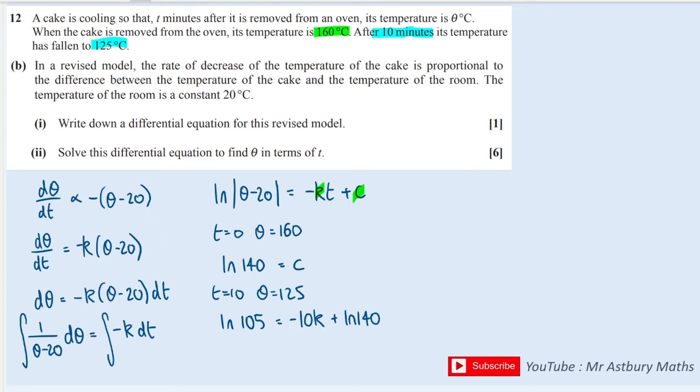Okay, so what I can do next is I can rearrange to find k. So first off, I can subtract the ln(140), and that's going to give me -10k. And then I can divide through by -10. So just quickly though, ln(105) - ln(140) is the same as ln(105/140). And then dividing through by -10 is going to give me -1/10 of this. And 105/140 is 0.75 or three quarters—we'll put 0.75.